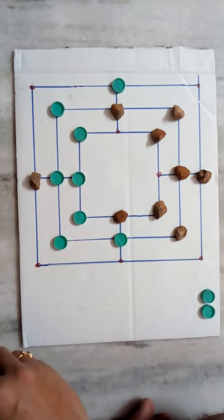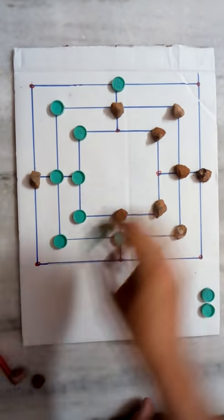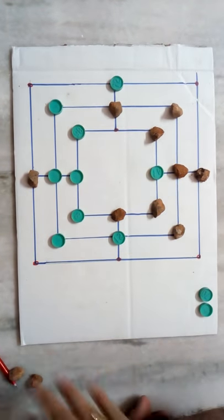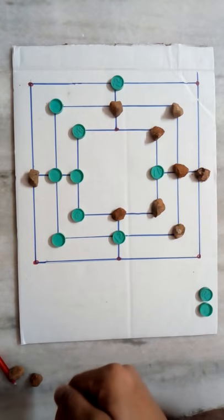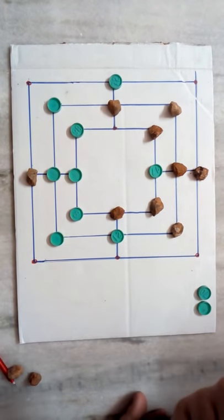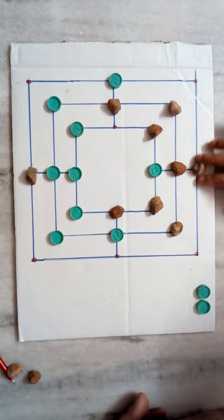She put this, so this is the last coin. I put here. Now once all coins are completed, we need to move. I put last, so she has to move first. She has moved.